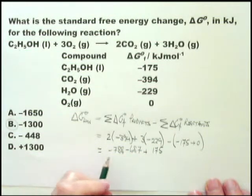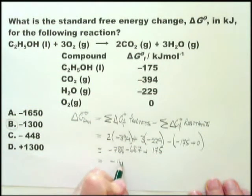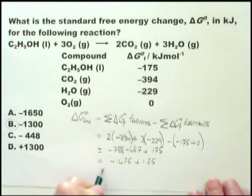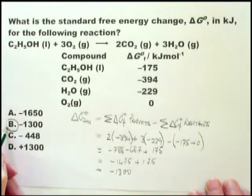And this equals minus 1475 plus 175, which equals minus 1,300. This is minus what? 1,300.